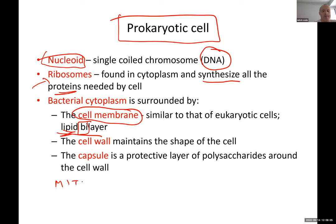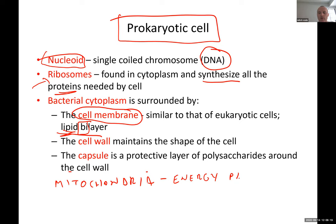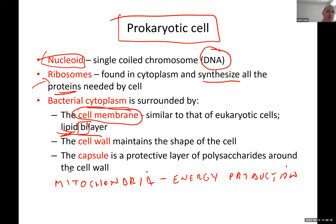Prokaryotic cells also have mitochondria. Mitochondria is the organelle inside the cell involved in energy production. Outside the cell membrane, bacteria need additional protection because they are exposed to all kinds of conditions, which could cause the cell membrane to disintegrate and kill the bacteria.